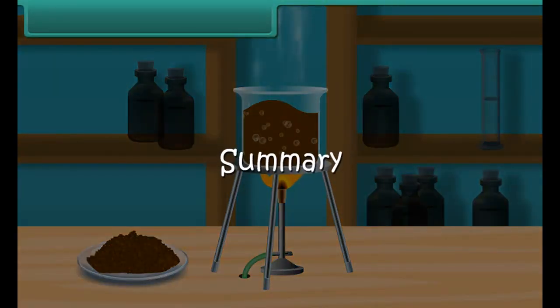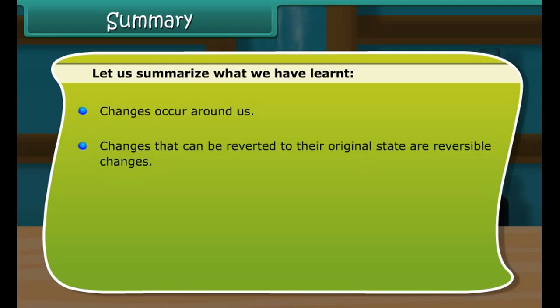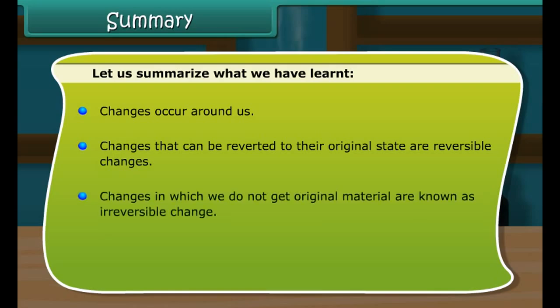Summary. Let us summarize what we have learned. Changes occur around us. Changes that can be reverted to their original state are reversible changes. Changes in which we do not get the original material are known as irreversible changes. On heating, water changes to water vapour. This is known as evaporation.